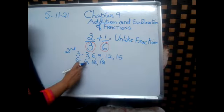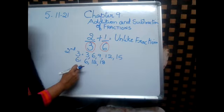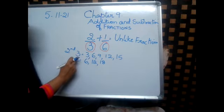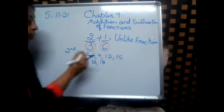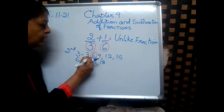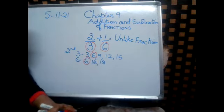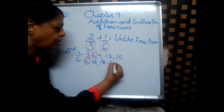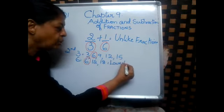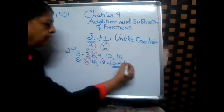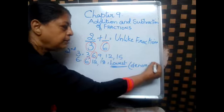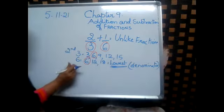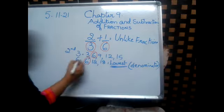Now, here we find that there are 6 and 6 — this is a common multiple in both the denominators, in 3 and 6. Even 12 is also there, but we are going to take the lowest common multiple. This lowest one will become the denominator, the common denominator for both, because it appears in both the 3 table and the 6 table. So, the common multiple is 6.